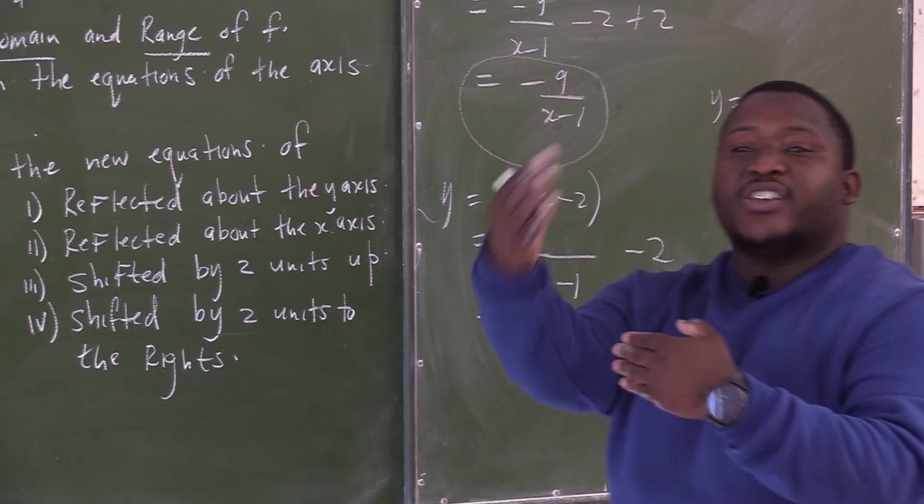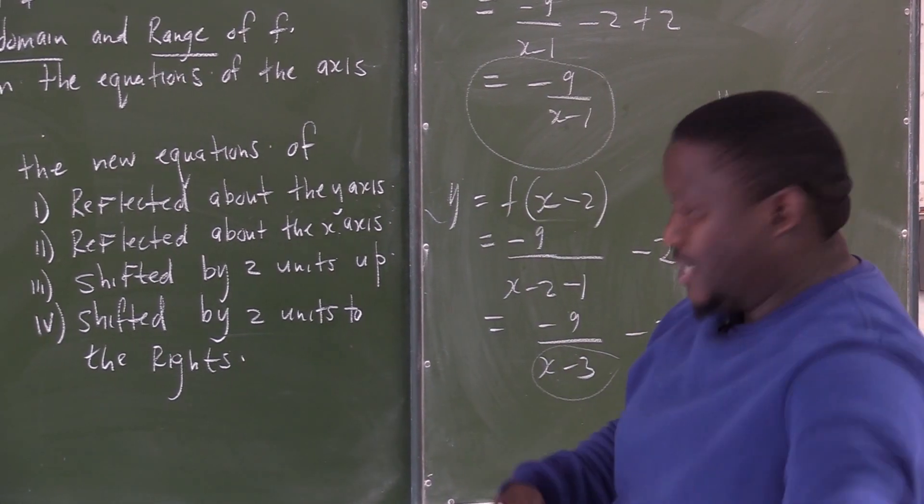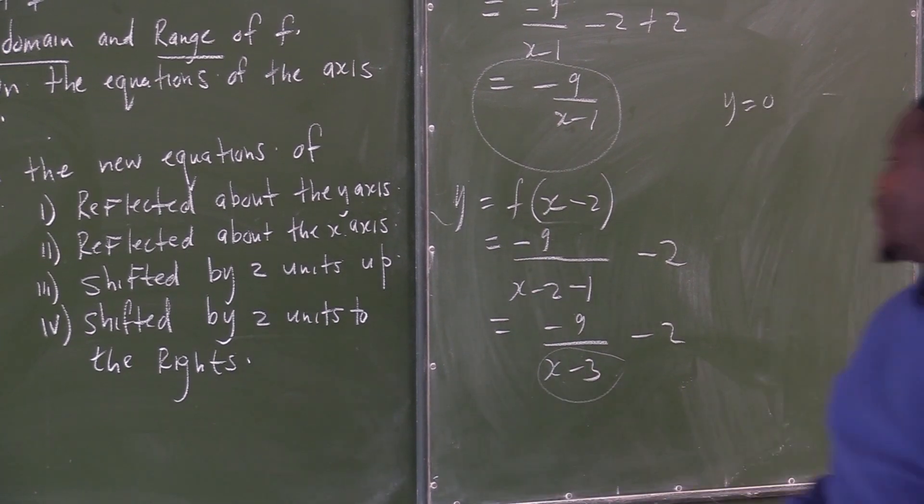But if the movement is towards your left, you go to the equation, you replace x with x plus so that you can be able to find the correct value.